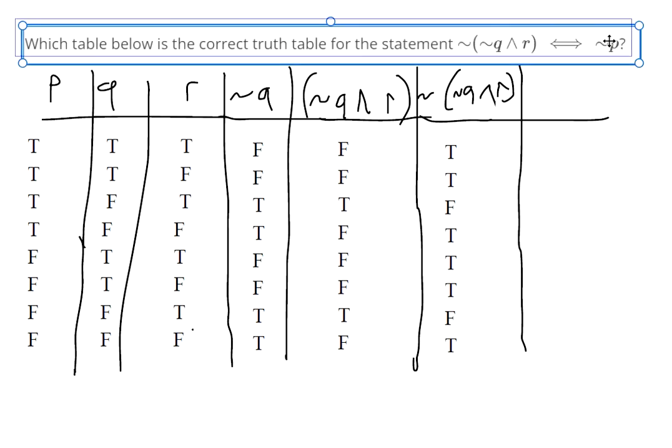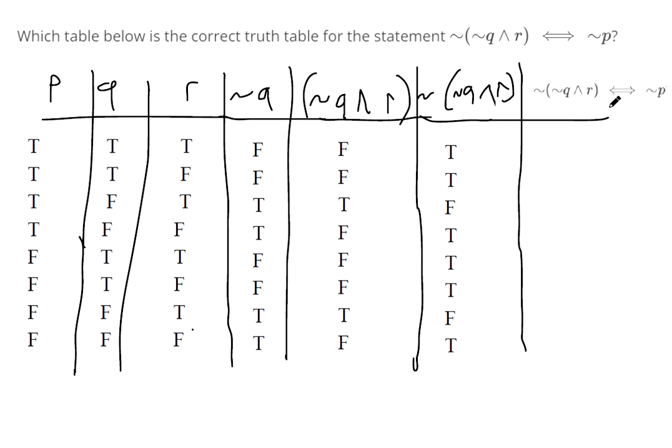Now it looks like we're ready for the biconditional. So the way the biconditional, oh actually we need a not P column. But maybe we can get by without it. The negation of P just means false, false, false, false, true, true, true, true.